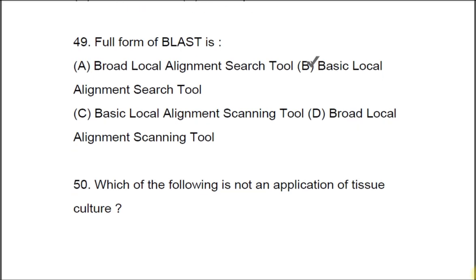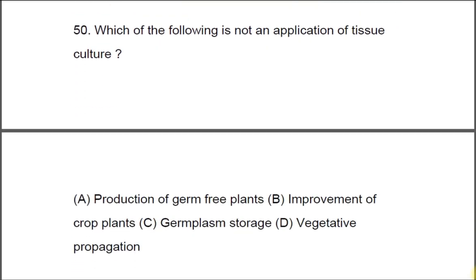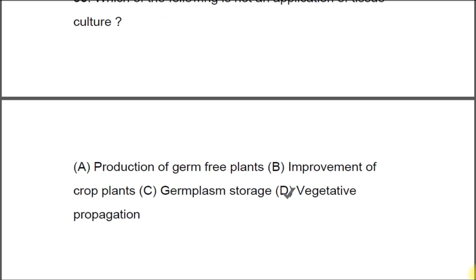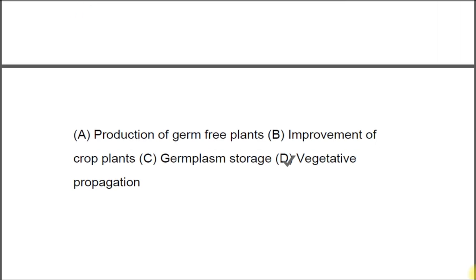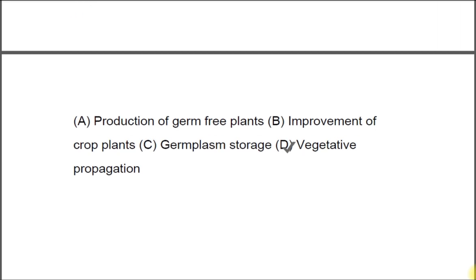Question 50: Which of the following is NOT applicable to tissue culture? A) production of germ-free plants, B) improvement of crop plants, C) germplasm storage, D) vegetative propagation. The correct answer is D, vegetative propagation. This was the solution of the JNMU question paper. If you want explanation of any question or disagree with any answer, you can write in the comment section.